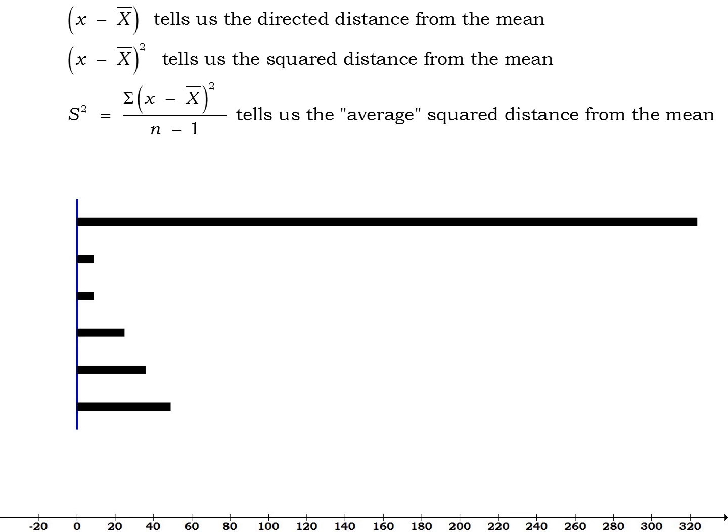But remember, our goal here was not to calculate the average squared distance from the mean. Instead, we were handed this formula for the sample variance and we wanted to know what it was trying to tell us. So the sample variance essentially tells you the average squared distance from the mean. So the further away from the mean your numbers are, the bigger the distances from the mean, the bigger the squared distances and the bigger the average squared distances.